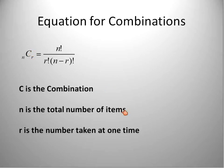C is the combination. N is the total number of items. And R is the number taken at one time.